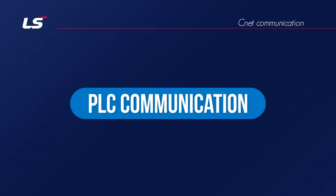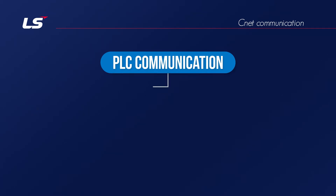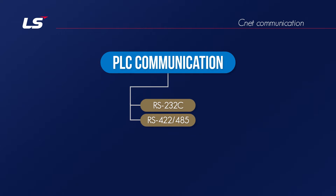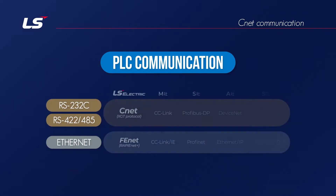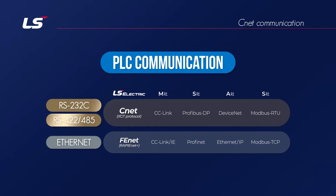PLC communicates with various devices in many ways. In this video, you will learn several types of communication that PLC supports. Serial RS-232C, RS-422/485, and Ethernet communication are the main types of PLC communication. The term for communication method differs for each manufacturer, but LS-Electric calls RS-232C, 422, and 485 as CNET, and LS-Ethernet as Rappinet.